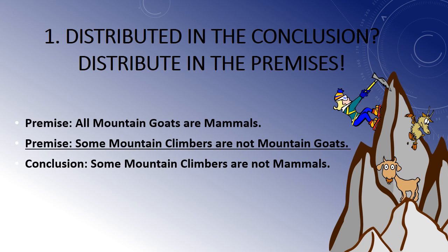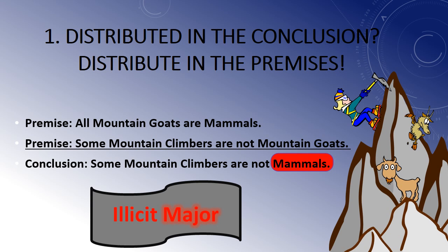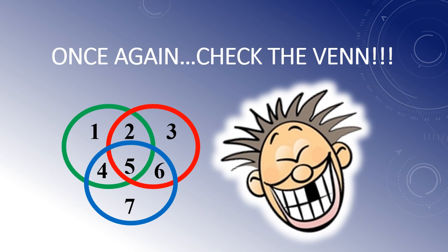Another practice example: 'All mountain goats are mammals, and some mountain climbers are not mountain goats — does it follow that some mountain climbers are not mammals?' That conclusion is very likely false. O sentences distribute their predicates, so 'mammals' is distributed in the conclusion. Was it distributed in premise one? It was not. This is the fallacy of illicit major. And if you're ever in doubt, the Venn diagram will do the job just as well.